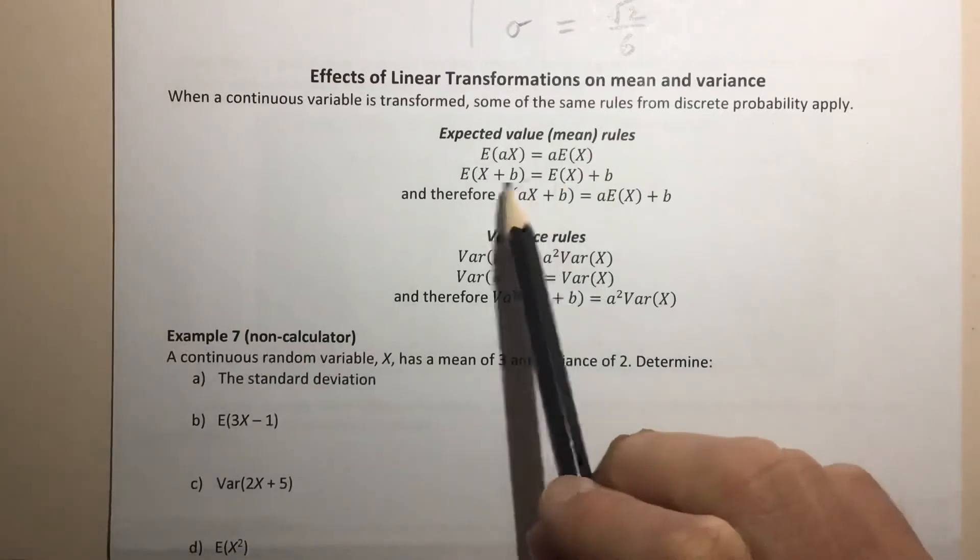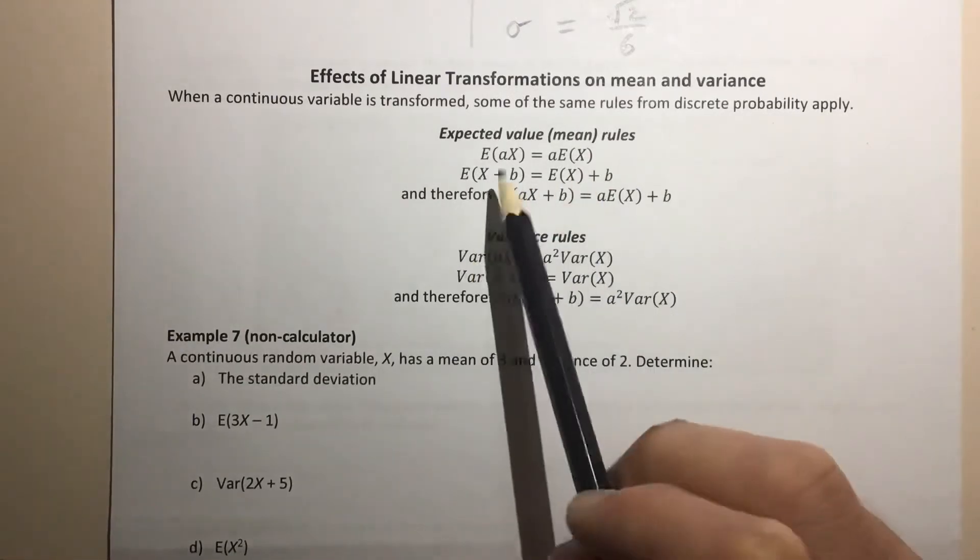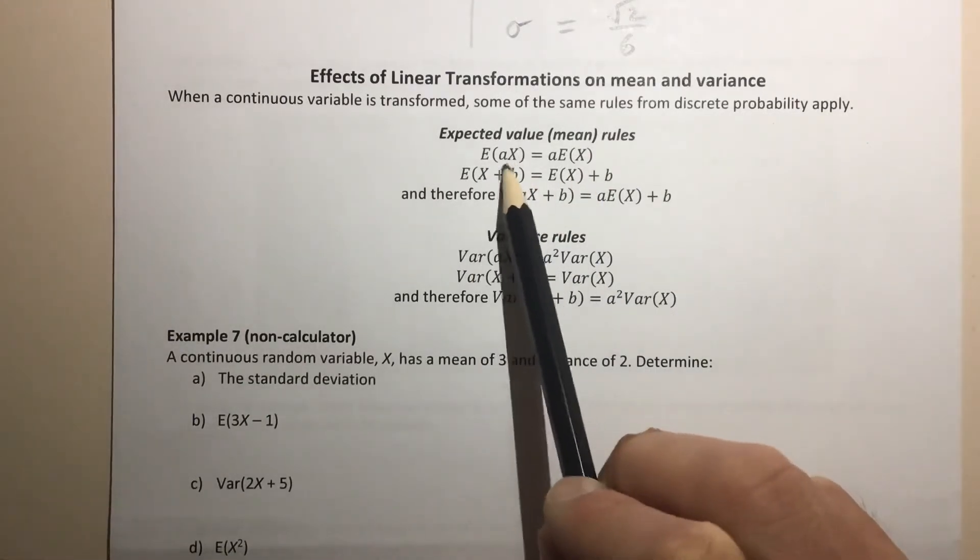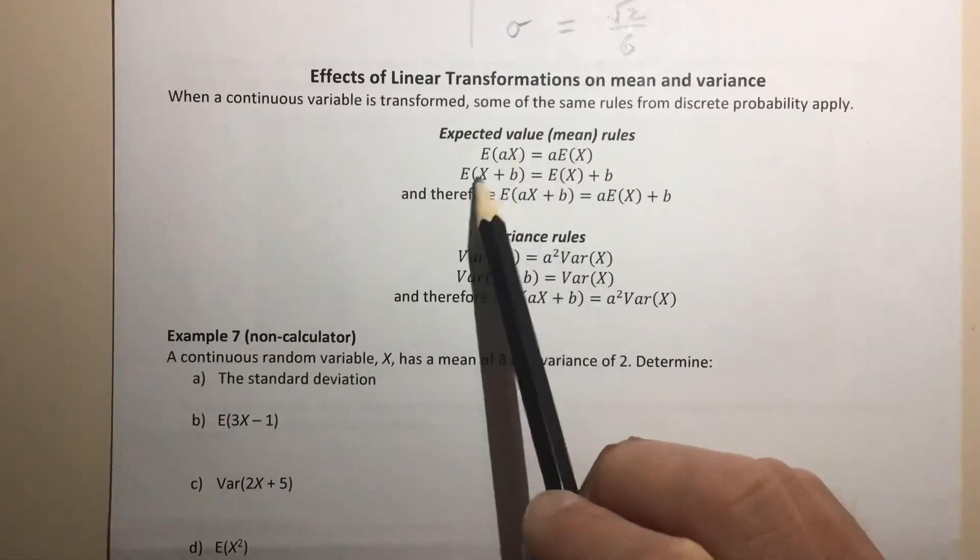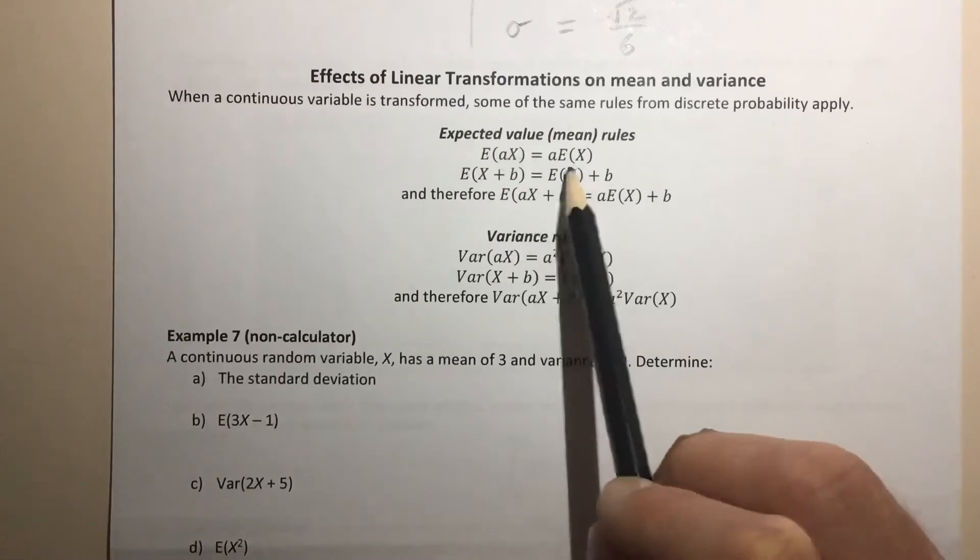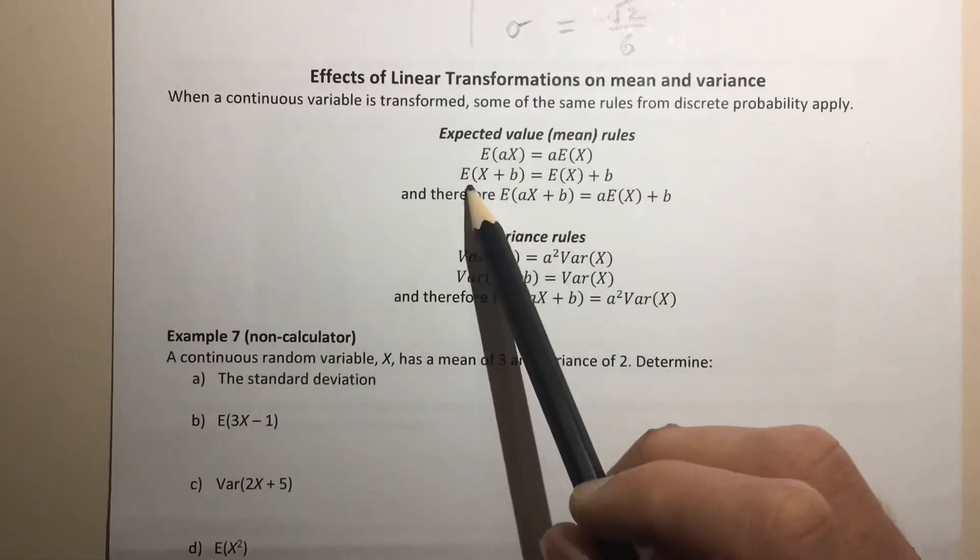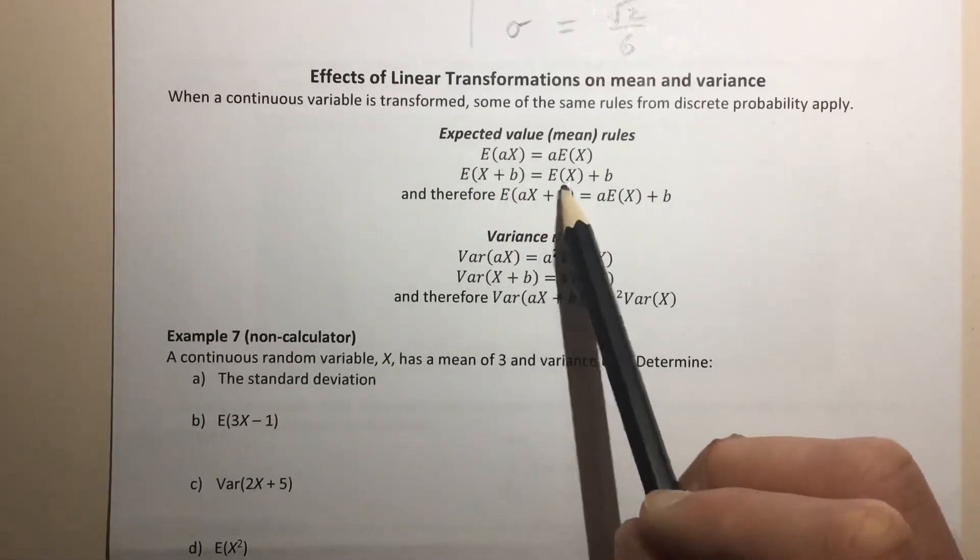and that obviously has an influence on what the expected value and the variance is going to be. We get a few different rules, and these are exactly the same as how they looked for discrete probability. The expected value of a times x, if we multiply our variable by a, that actually multiplies the expected value by a,